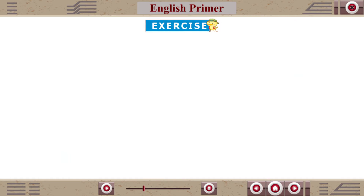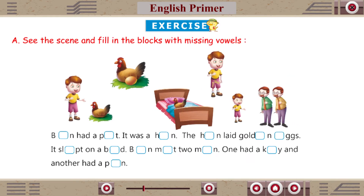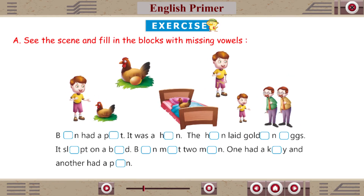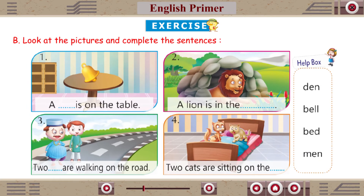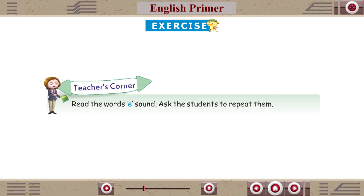Exercise A: See the scene and fill in the blocks with missing vowels. Exercise B: Look at the pictures and complete the sentences. Teacher's Corner: Read the words with E sound. Ask the students to repeat them.